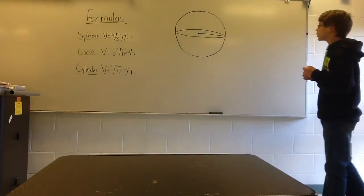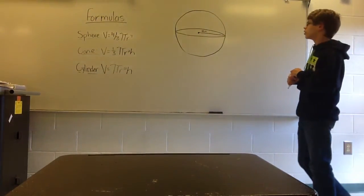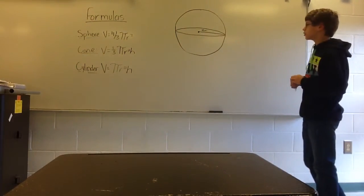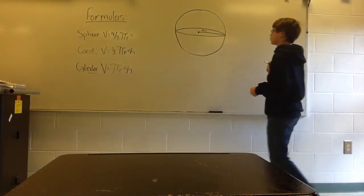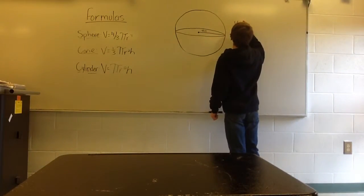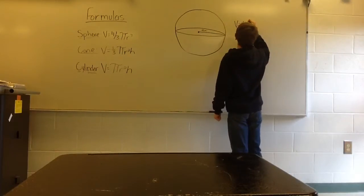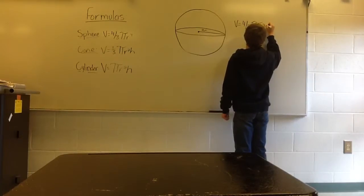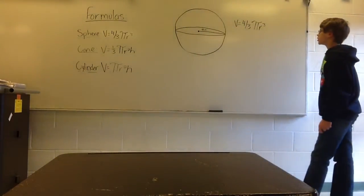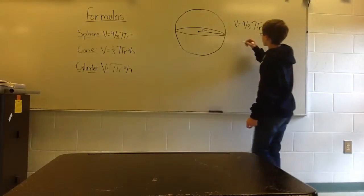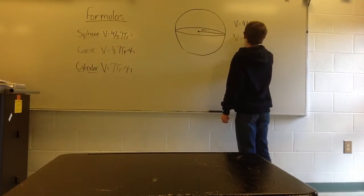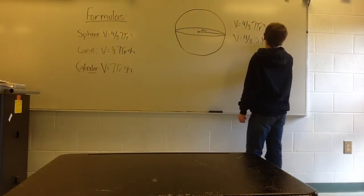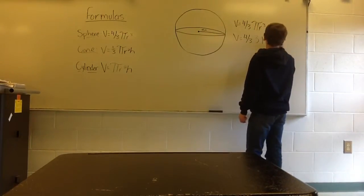Our first problem today is going to be finding the volume of a sphere. The formula is shown right over there. We are going to use V equals 4 thirds pi r cubed. So we are going to fill in our formula: 4 thirds times 3.14 times 4 cubed.